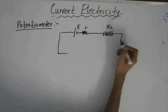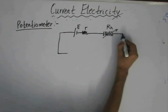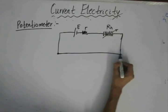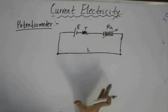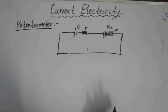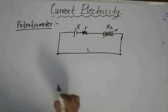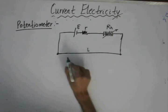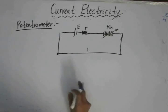The rheostat is basically a variable resistor whose resistance we can vary. Across the circuit, we have connected some length of wire. The length of the wire is L; generally for a potentiometer, the length will vary from four to ten meters. A higher length of the potentiometer gives higher accuracy. So if you want to increase the accuracy or sensitivity of a potentiometer, we can use a larger length of wire in the potentiometer circuit.